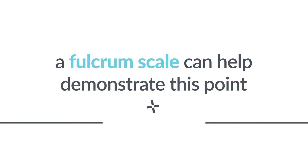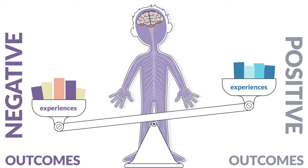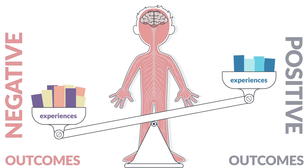Risk and protective factors can also offset or balance each other out. A fulcrum scale can help demonstrate this point. When positive protective experiences outweigh negative experiences, a child's scale tips toward positive outcomes. Negative experiences can destabilize positive development and tilt the scale toward negative outcomes. Some children start out with the scale tipped toward negative outcomes, putting them at greater risk for ACEs than other children.